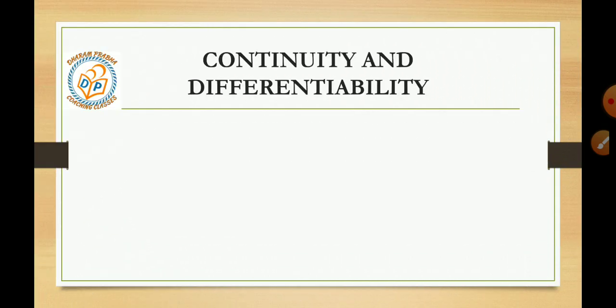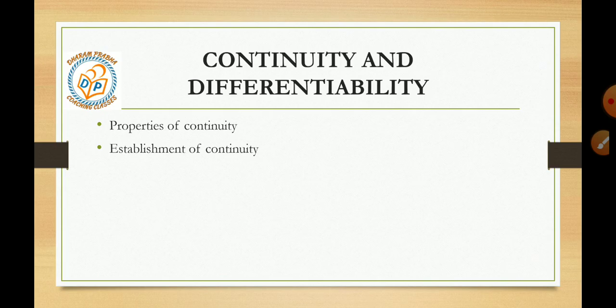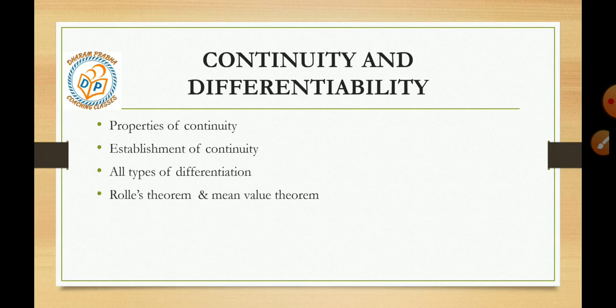Chapter number 5 is Continuity and Differentiability. In continuity, you can get property of continuity questions and establishment of continuity questions from 1-mark or 2-mark. Next, in differentiability, you should be clear about differentiability because your question will be based on differentiability. After this, Rolle's theorem and mean value theorem, you will revise it one time. There are chances questions can come for this topic, so you have to revise.